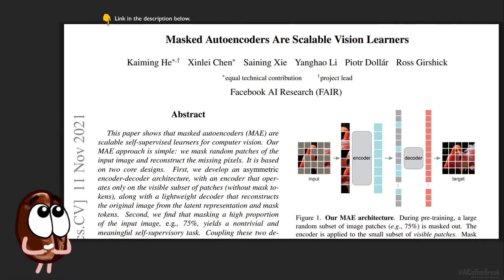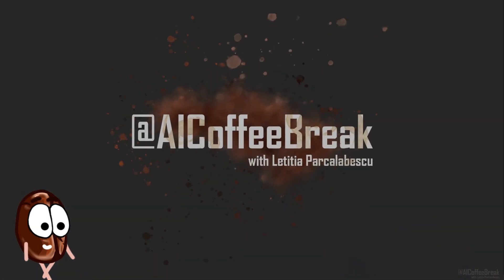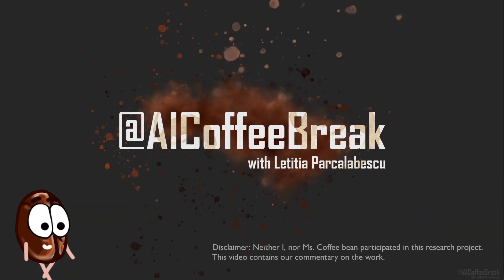Autoencoders are fashionable again in computer vision. This paper combines our favorite things: transformers, masking, autoencoding, and self-supervision in a beautifully written paper with a simple yet powerful idea. So welcome to this AI Coffee Break, where we will break down and explain the most important contributions of this paper.